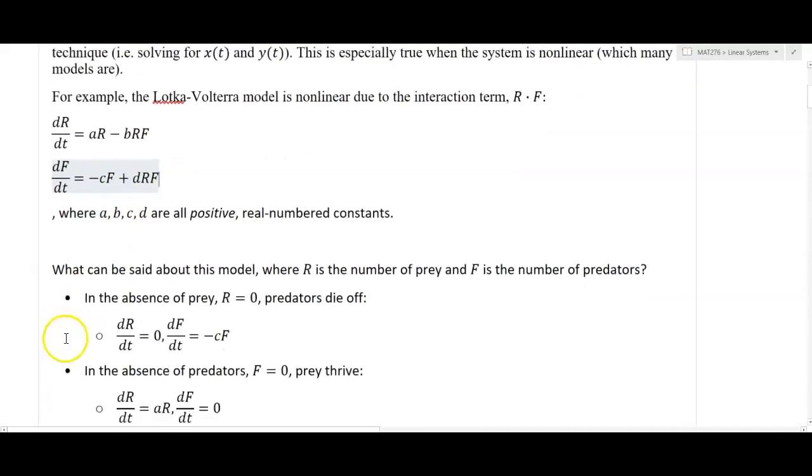So what can be said about this model? If we can't solve it, what can we say where R is the number of prey and F is the number of predators? Well, we can do analysis like what happens if there are no prey? If R equals zero, plugging in zero for R makes the negative BRF term go away and the AR term goes away as well, so dR/dt equals zero. For dF/dt, if we put in zero for R, then we get dF/dt equals negative C times F. This is a scalar multiplier of F, meaning we have ultimate decay in the fox population, and the predators are going to die off.